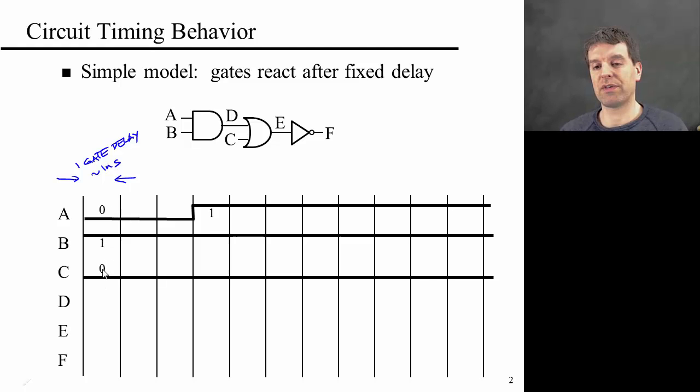So the basic idea is that given your current input values, you can't know what the current output values are of the gate. You can only know what the output values will be one gate delay later. So here in this representation, the thick line represents the current value of a variable. So A starts out 0, then goes up to 1, B remains 1 throughout the whole calculation, and C remains 0. So the first thing we want to calculate is the value of D. As I said, we know what the current values are of A and B, but we can't know what the current value of D is.